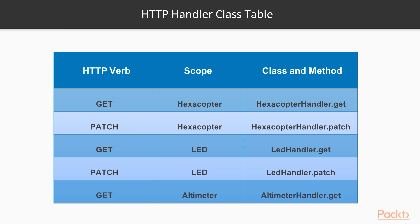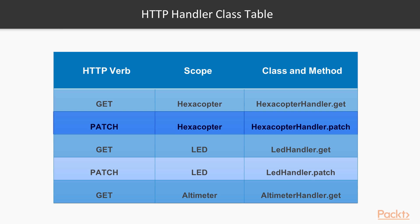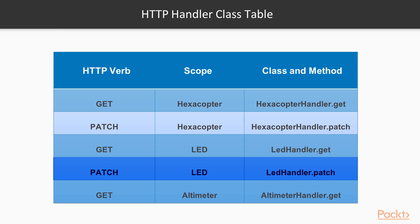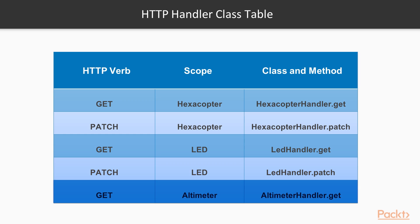Now we will see the table showing the methods of our previously created HTTP handler classes: get hexacopter maps to HexacopterHandler.get, patch hexacopter to HexacopterHandler.patch, get LED to LEDHandler.get, patch LED to LEDHandler.patch, and get altimeter to AltimeterHandler.get. If a request invokes an HTTP handler class with an unsupported HTTP method, Tornado will return a response with the HTTP 405 Method Not Allowed status code.